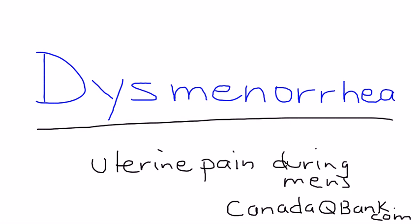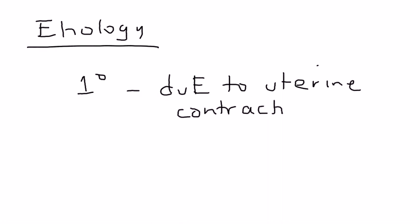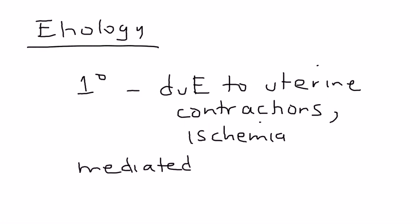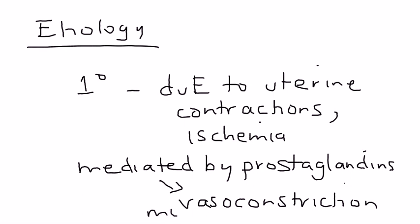There's a long list of secondary causes, so let's talk a little bit about the etiology. The primary cause is just due to the actual uterine contracting. In addition to the contractions, you also have uterine ischemia, and this is thought to have been mediated by prostaglandins. These prostaglandins are involved in the vasoconstriction of the vessels, and they're also involved in the stimulation of the myometrium.